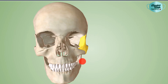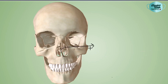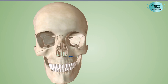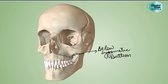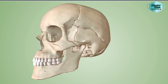Le Fort 1 fracture is a low-level fracture, also called a subzygomatic fracture because it is present below the level of the zygomatic bone. The fracture will begin from the lateral margin of the anterior nasal aperture and extend in a backward direction below the zygomatic buttress, traversing posteriorly up till the pterygoid plates or the pterygoid lamina of the sphenoid bone.